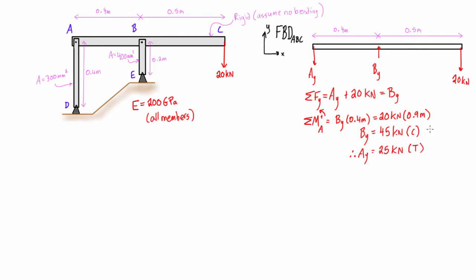So we find that the reaction BY here is 45 kilonewtons pressing up and the reaction at AY is 25 kilonewtons pressing down, and what that really translates to is that the member AD here is in 25 kilonewtons of tension, and the member BE here is in 45 kilonewtons of compression.